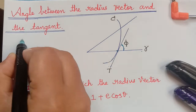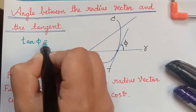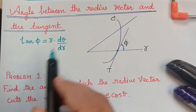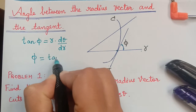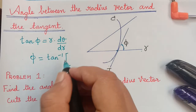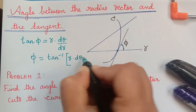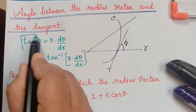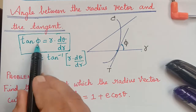As per the formula, we have tan phi equal to r multiplied with dθ/dr. Using this we can evaluate the angle phi by taking tan inverse on both sides. So tan inverse of tan phi will be phi, and on the right it will be tan inverse of r multiplied with dθ/dr. First we will find tan phi and then we will find the angle phi using that.